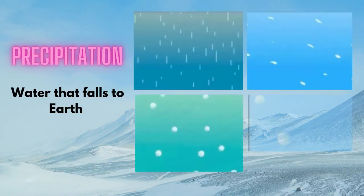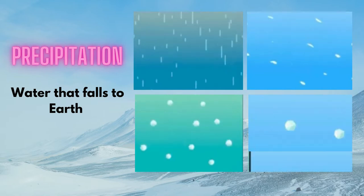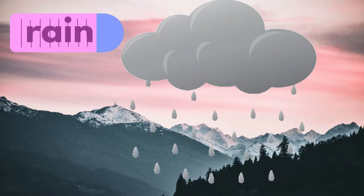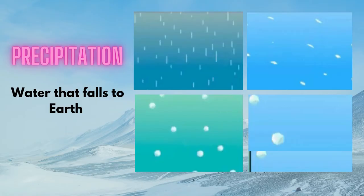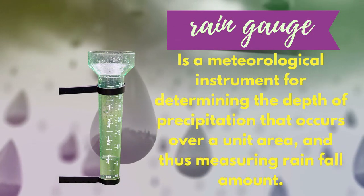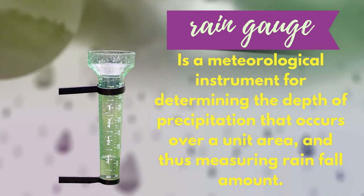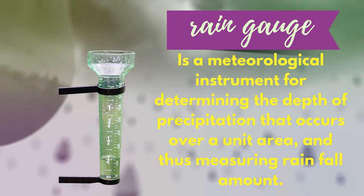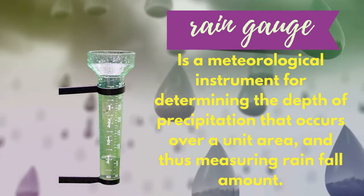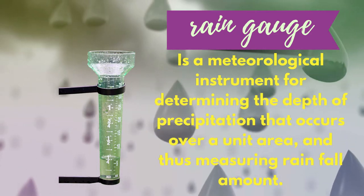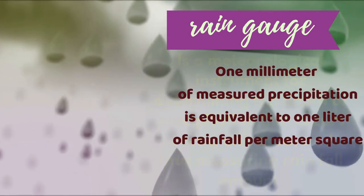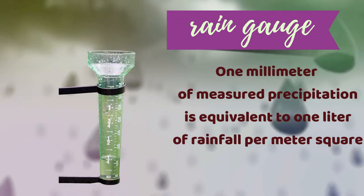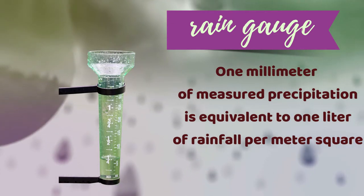Precipitation is water that falls to Earth in any form — like rain, snow, sleet, or hail. A rain gauge is a meteorological instrument for determining the depth of precipitation that occurs over a unit area, thus measuring rainfall amount. One millimeter of measured precipitation is equivalent to one liter of rainfall per square meter.